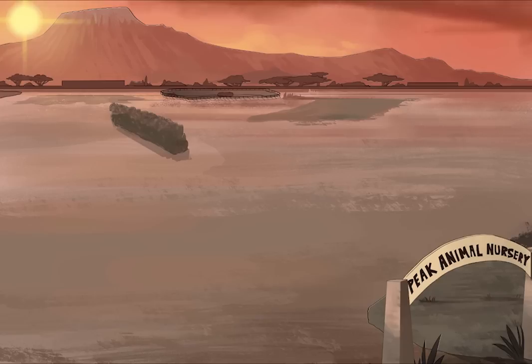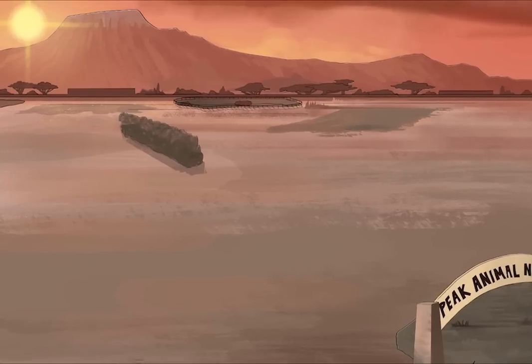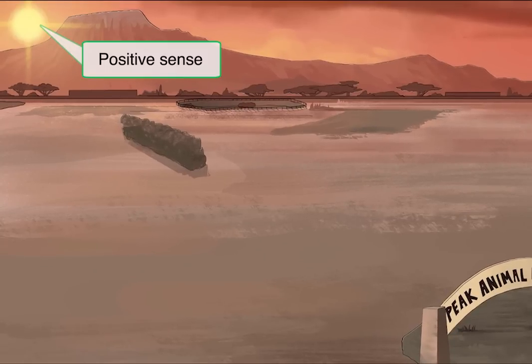The RNA viruses have another dividing point — they can be either positive or negative sense. I'll explain exactly what that means in a bit, but for now I want to introduce our recurring theme to differentiate positive from negative. Positive sense RNA viruses will take place during the daytime, so negative sense will obviously take place at night. Although the yellow-orange color scheme makes this scene appear to take place at dusk, the sun is here, so it counts as daytime. You'll see that our negative sense RNA viruses are really obviously at night. Since it's daytime, you now know that the picornavirus family is a positive sense RNA virus.